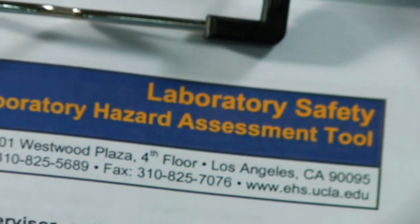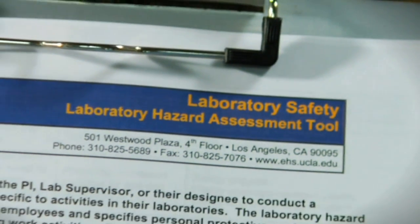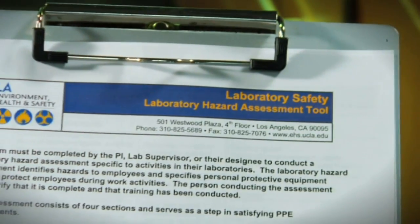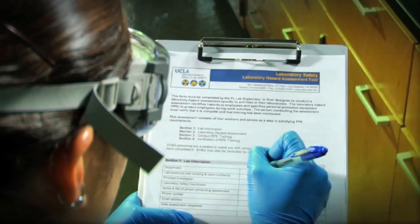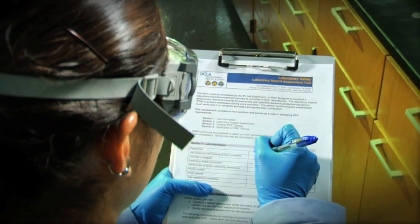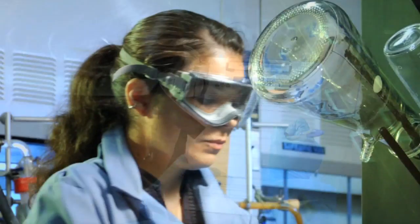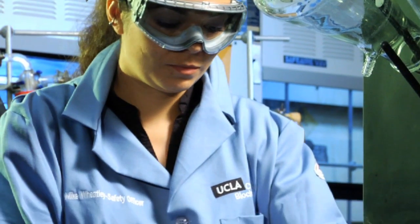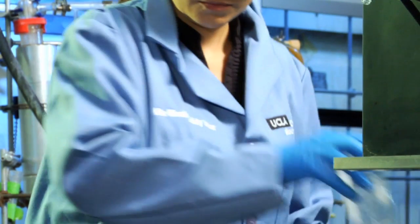Begin by reviewing potential laboratory hazards using the UCLA Laboratory Inspection Checklist and the Laboratory Hazard Assessment Tool. Copies of these documents must be kept in your laboratory manual. Once hazards are identified, proper steps can be taken to mitigate their danger.